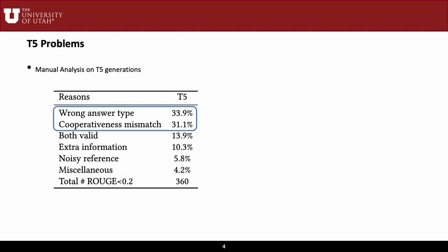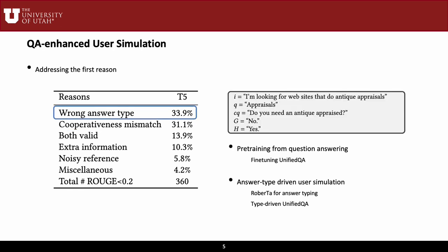Instead of simply reporting this as the new state-of-the-art, we conduct an in-depth investigation on the T5-small generations to see why they have low scores. We categorize six reasons as shown in the table.